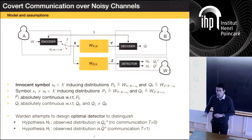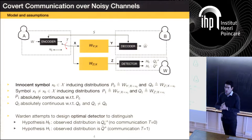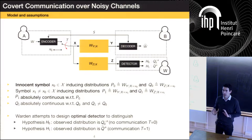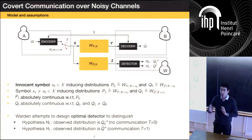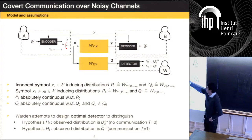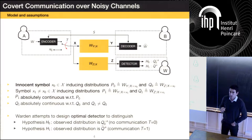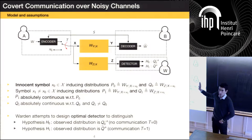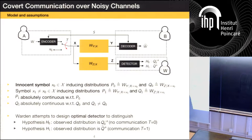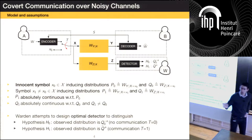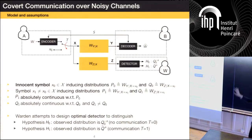Said differently, the situation is: I may or may not communicate with Alice. If I were to communicate, I would do it using that specific code — and I'm telling you which code I would be using. Based on knowing which code and your channel output observation, you have to decide whether that really happened. I'm assuming my messages are uniform, so you know the messages are uniform. I'm not hiding anything about the codebook.